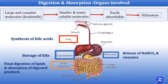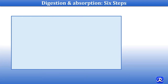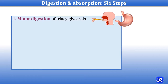The process of digestion and absorption involves six important steps. First, minor digestion of triacylglycerol in the mouth and stomach by lingual and gastric lipase.